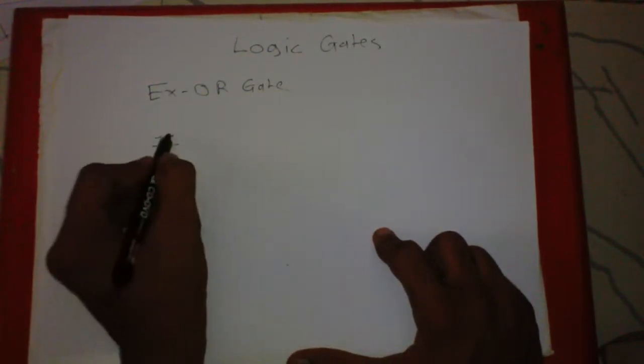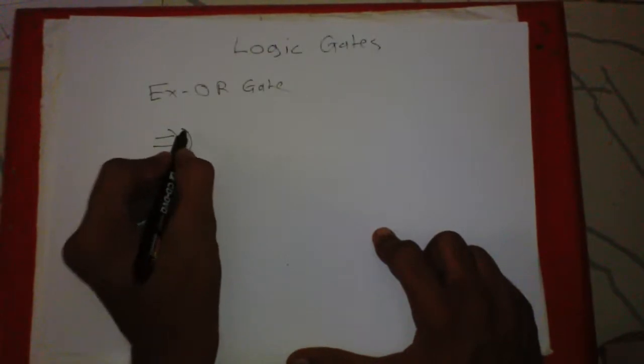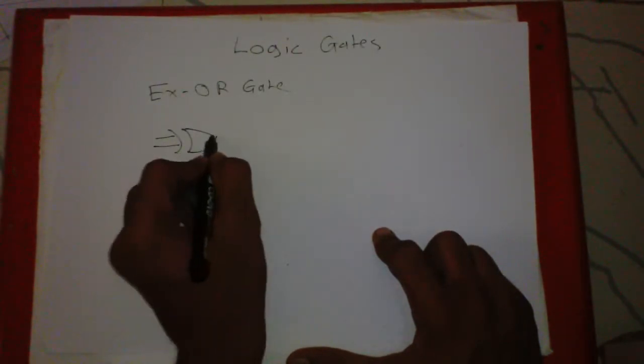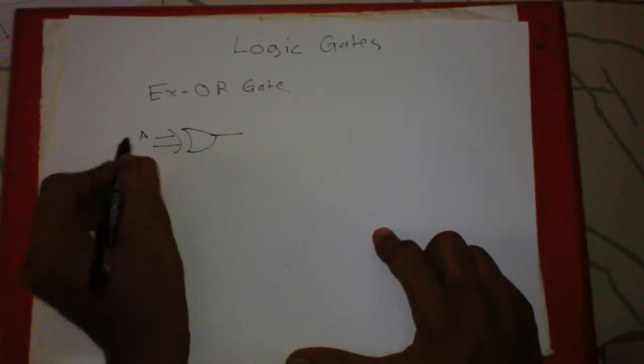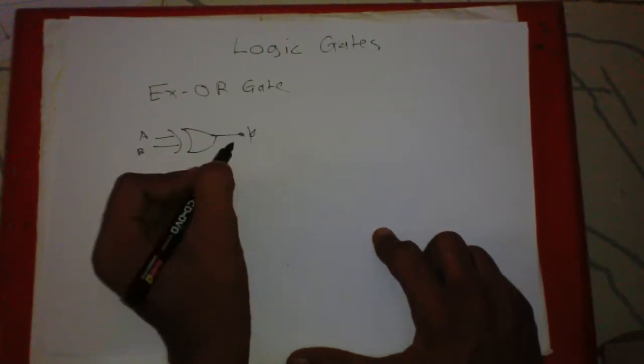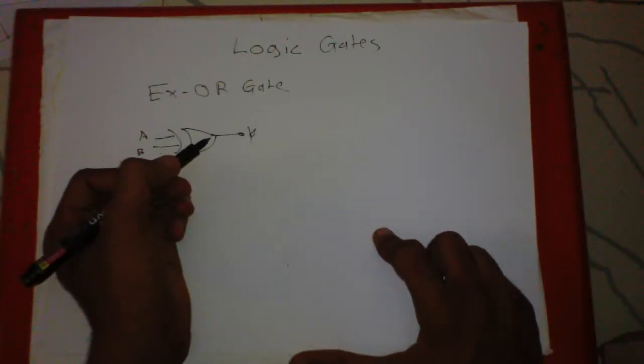Where two inputs are A and B and output is Y. The statement for XOR gate is: